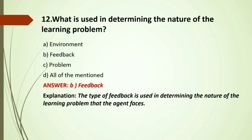MCQ: What is used in determining the nature of the learning problem? Options: A) Environment; B) Feedback; C) Problem; D) All of the mentioned. Feedback is the key — learning from feedback is most useful because it tells us what the user exactly wants, and it covers the problem faced while creating the algorithm and the environment. Answer: Feedback.